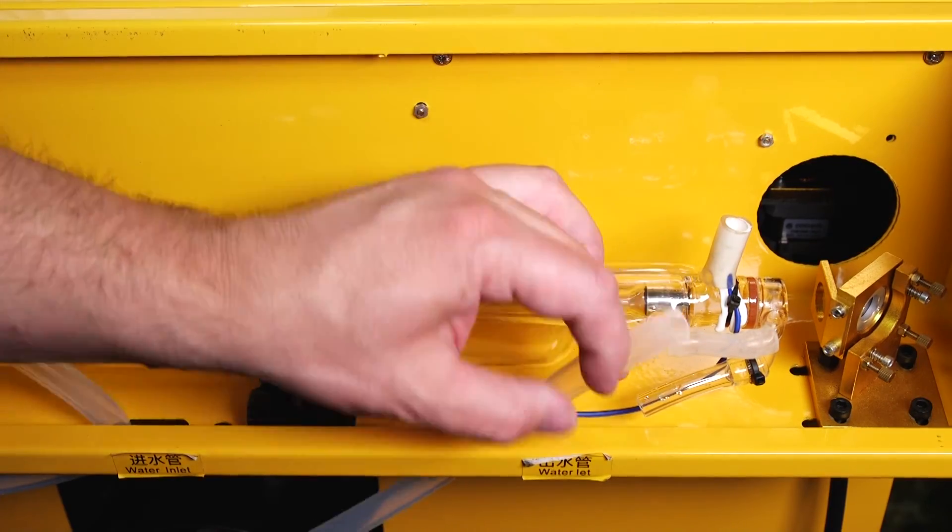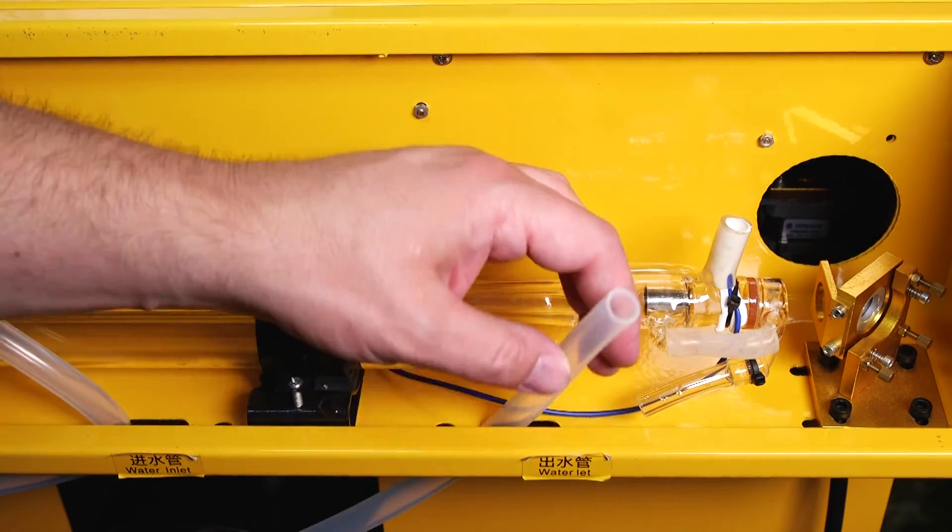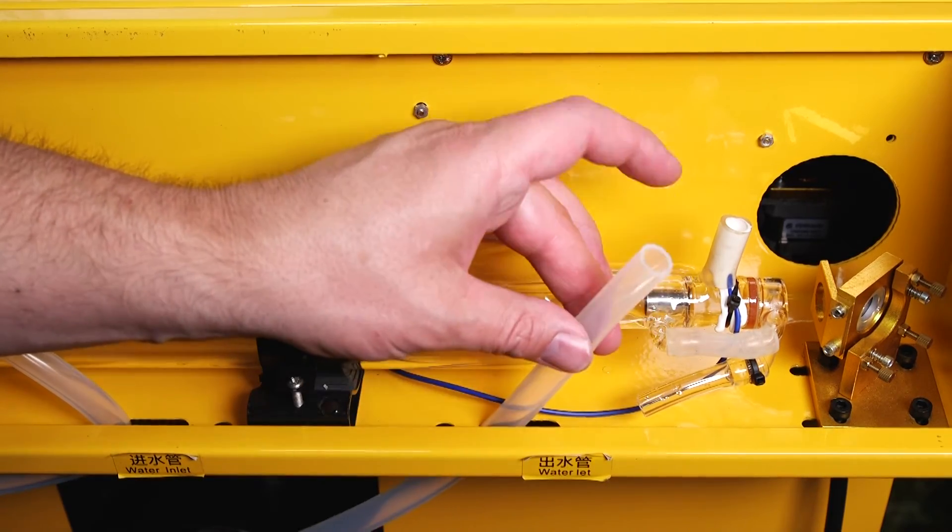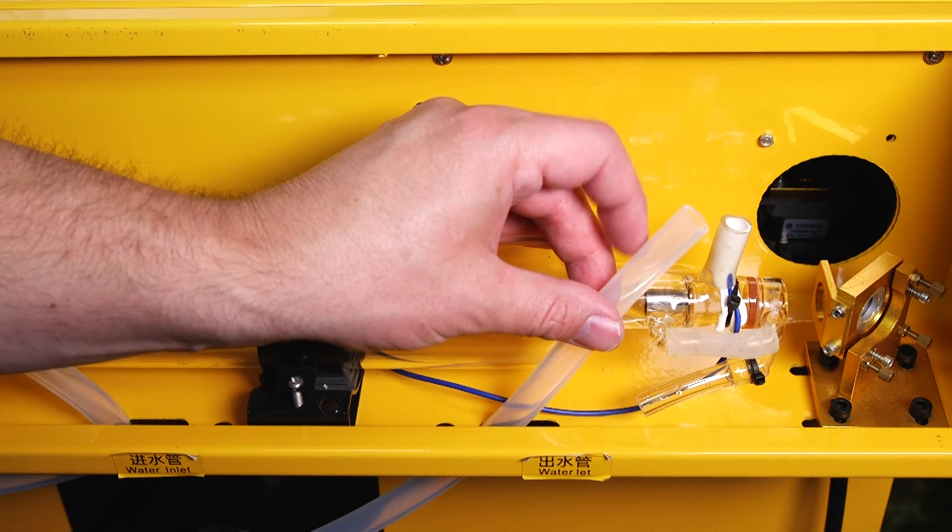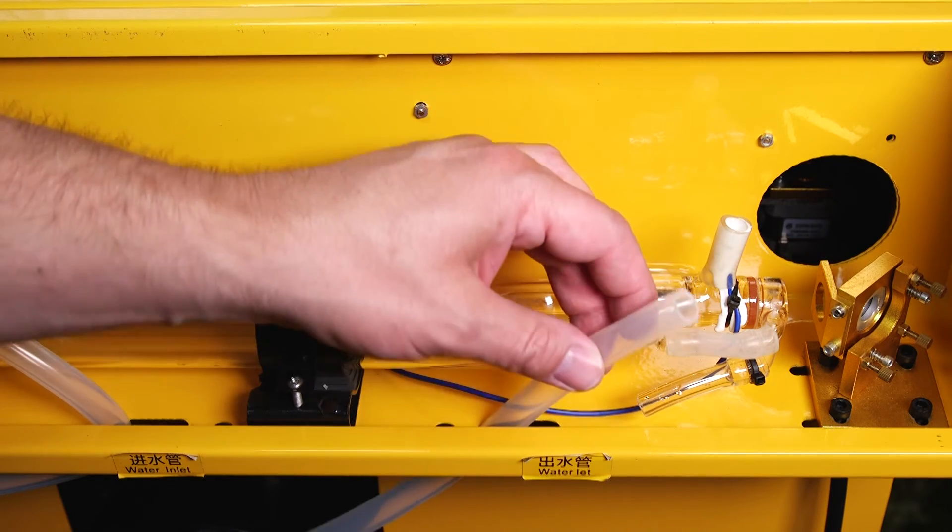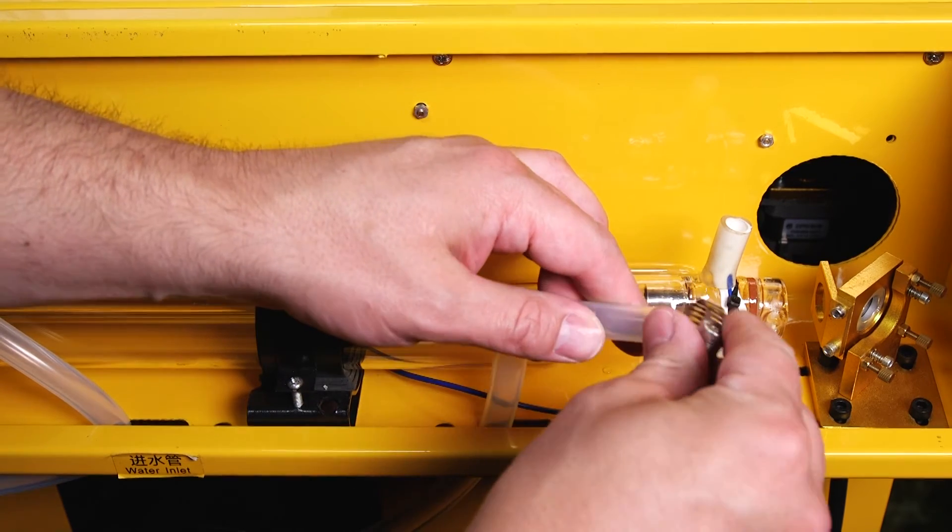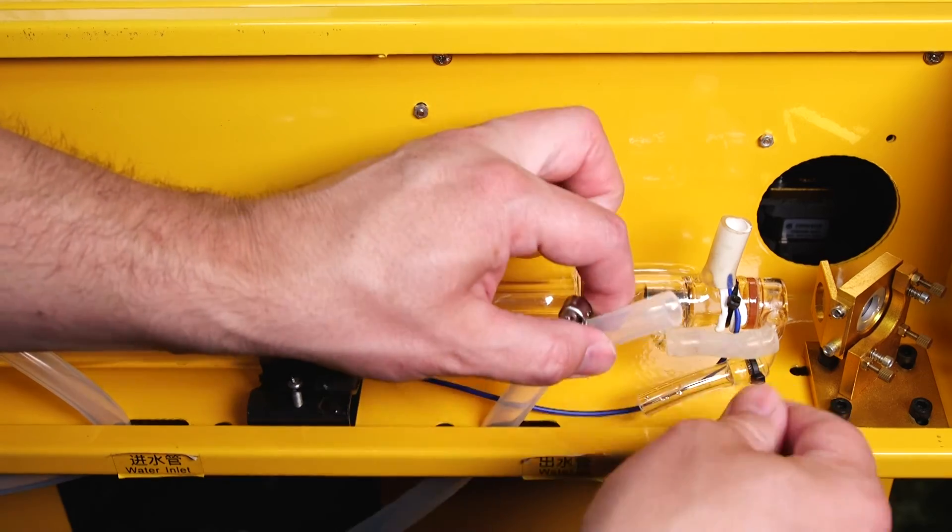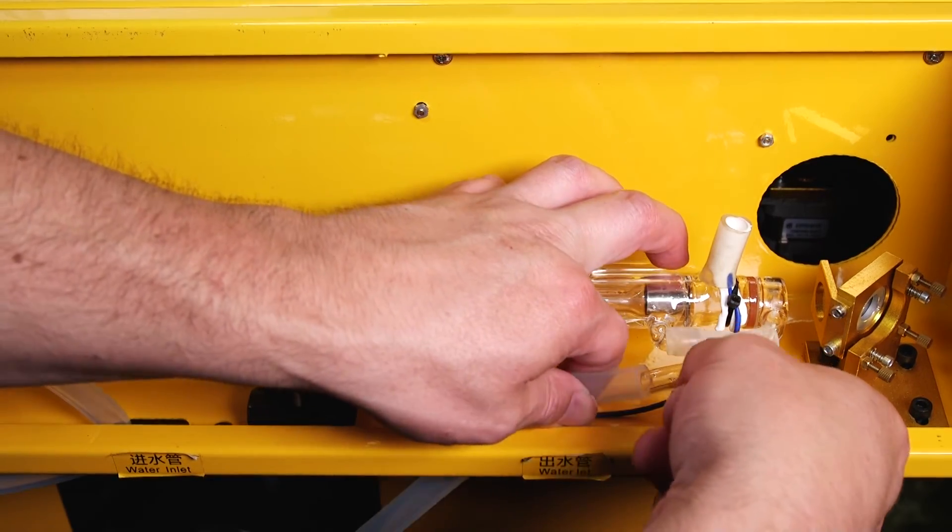Next I'm going to attach the piece of silicone hosing that I've cut for the right hand side of the CO2 laser bulb. This is the outlet or return tubing so make sure you cut it to proper length for that. Like the other side I'm going to secure it to the vinyl tubing with a hose clamp.